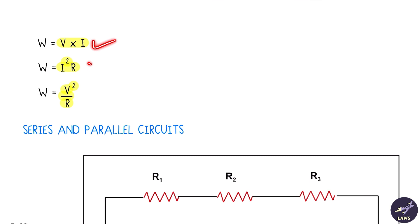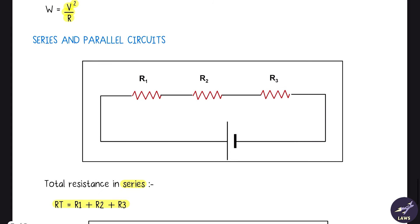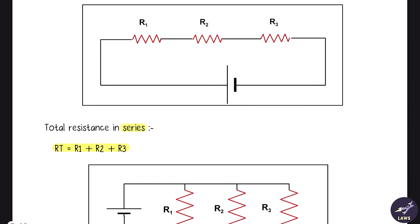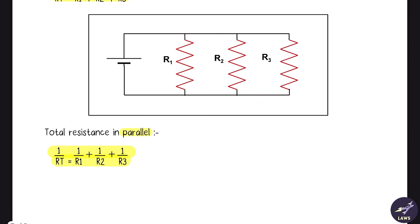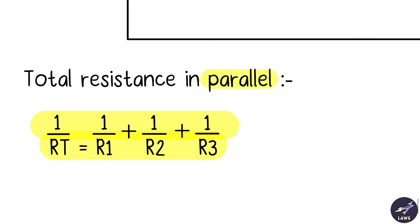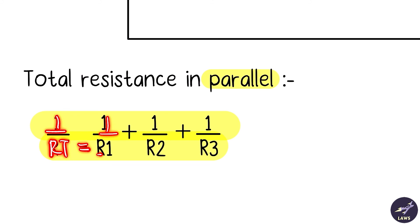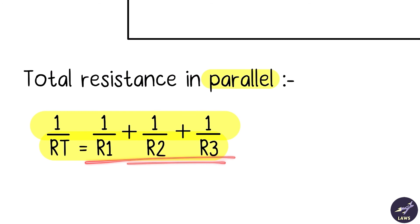For series and parallel circuits: resistance in series is R_total = R1 + R2 + R3. Resistance in parallel is given by 1/R_total = 1/R1 + 1/R2 + 1/R3. An important point to remember: it is 1/R_total on the left side of the equation — not R_total directly equaling that expression.